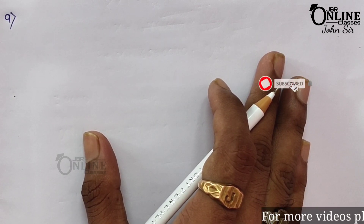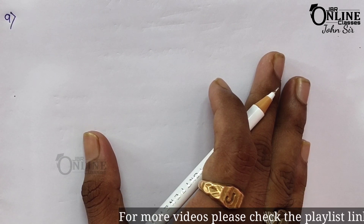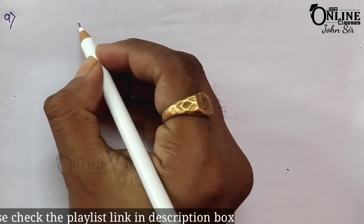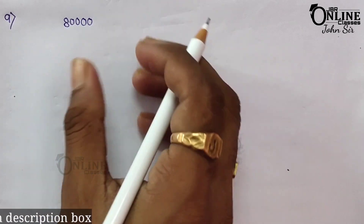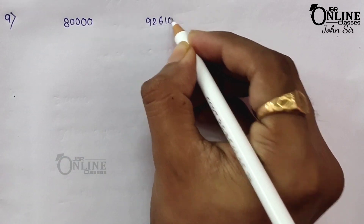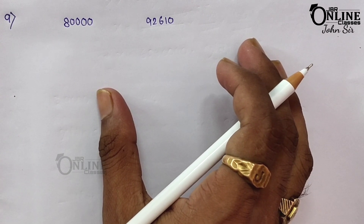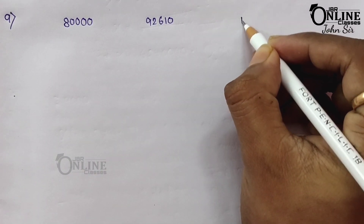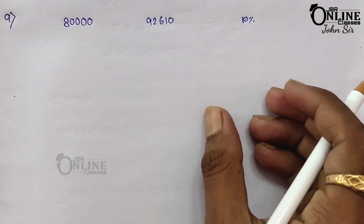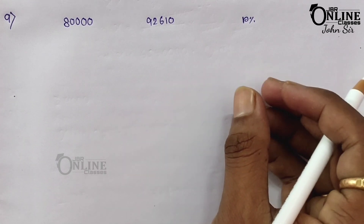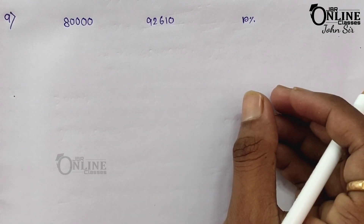In sum number 9, a factory increases its production of cars from 80,000 in the year 2011–12 to 92,610 in 2014–15. Find the annual rate of growth of the production of the car. First, let r be the annual rate of growth. The total time from 2011 to 2014 is three years.